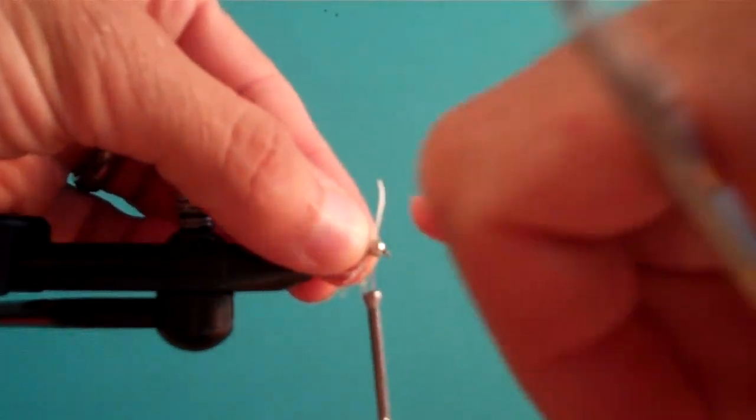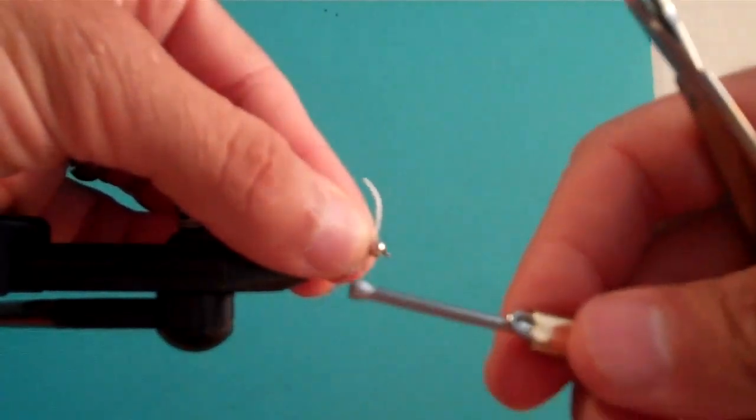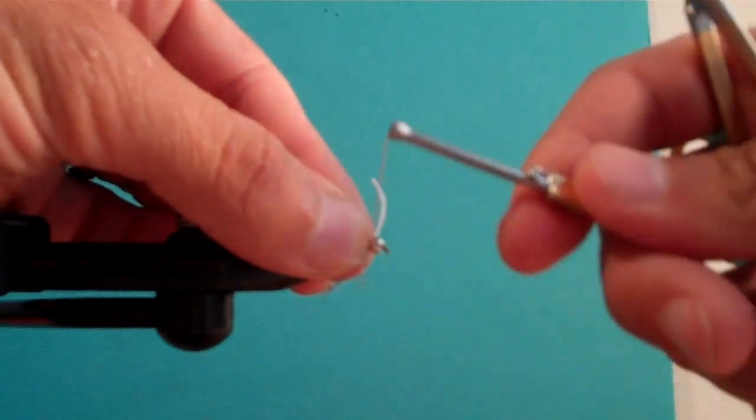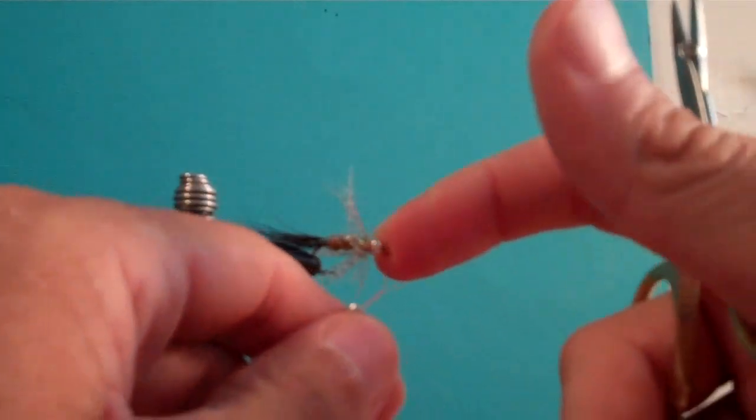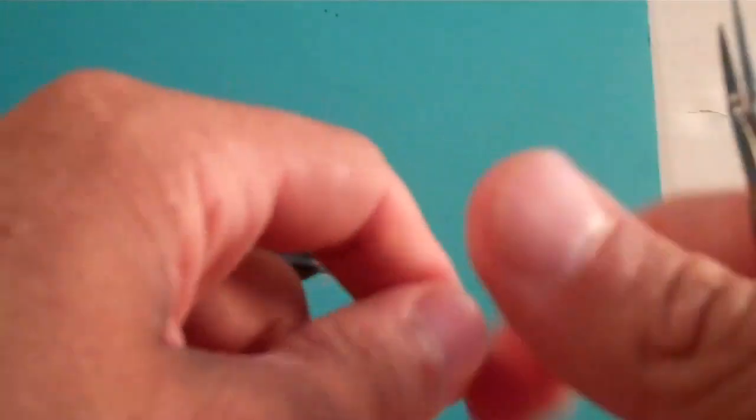Your fly is just about done. We're going to wrap behind the stem of the Hungarian partridge soft hackle. We're going to trim that there. Twist a couple times. And ba-boom.